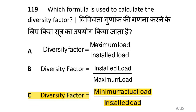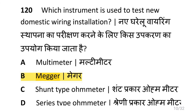Which formula is used to calculate the diversity factor? Diversity factor is equal to minimum actual load divided by installed load. Which instrument is used to test new domestic wiring installation? That is MAGR.